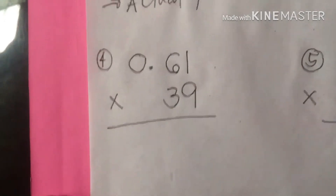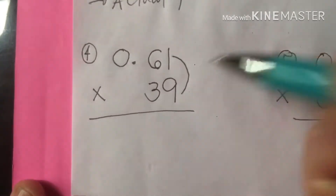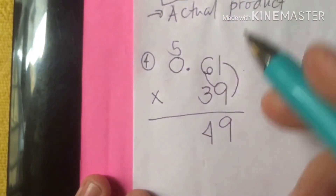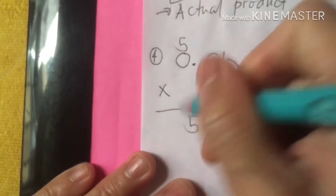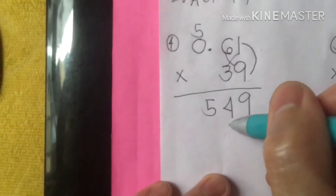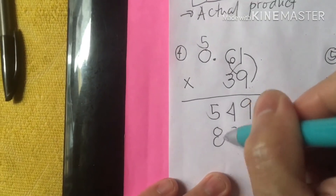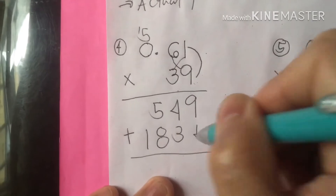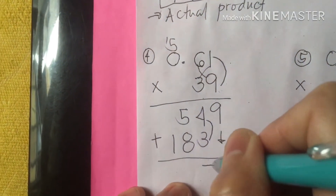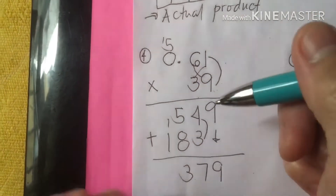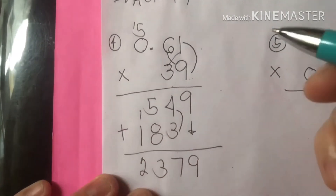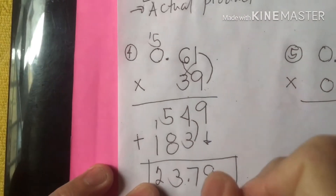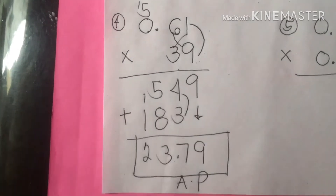Number 4: 1.61 times 0.39. 1 times 9 is 9. 6 times 9 is 54 — bring down 4, regroup 5. 0 times 9 is 0, bring down 5. Next, 3 times 1 is 3. 6 times 3 is 18 — bring down 8, regroup 1. 0 times 3 is 0, bring down 1. Sum up: bring down 9, 4 plus 3, then 5 plus 8 is 13 — regroup 1, bring down 3. 1 plus 1 is 2. Counting decimal places — 1, 2, 1, 2 — our actual product is 0.2379, the AP.